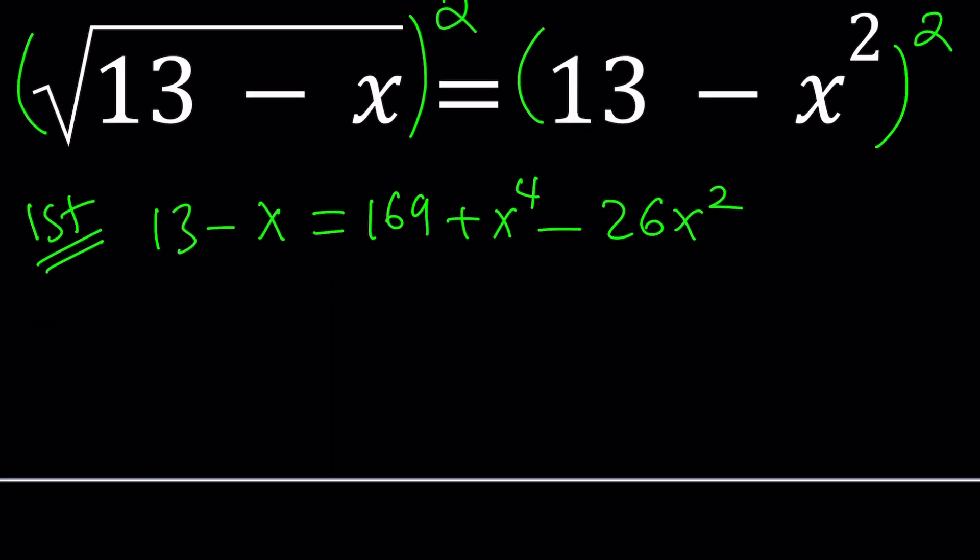Now let's go ahead and put everything on the same side with x to the fourth, where it's positive. So that'll be x to the fourth minus 26x squared plus x. And I'm going to bring the 13 over, so it's going to be minus 169 minus 13, that's going to be 156. And the whole thing will be equal to zero.